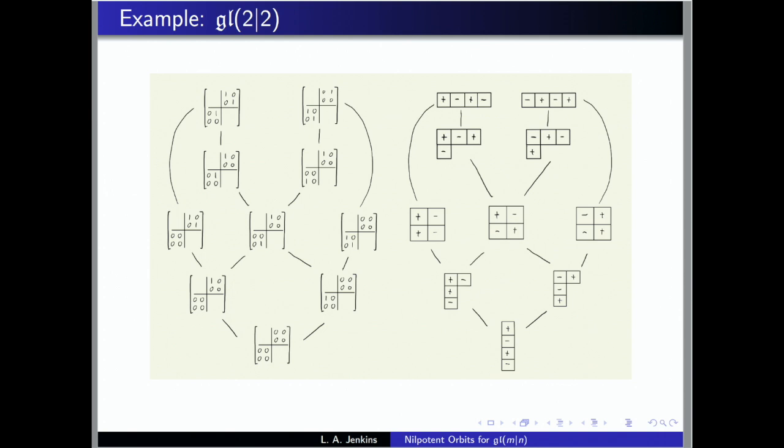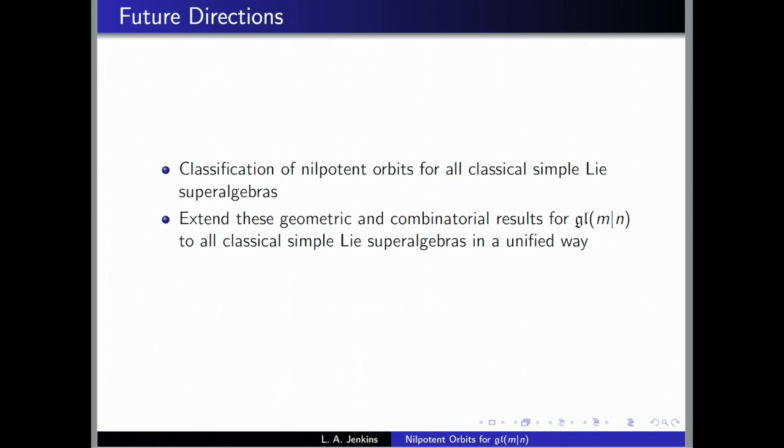To conclude with future directions: everything today was for type A. What about the other types? If you had a classification of nilpotent orbits for those types, that would be very useful, because what let us do everything today was having those explicit representatives to work with for type A. For the other types, we just know there are finitely many orbits but don't have explicit representatives. Having something concrete to work with, and then extending these results from GLMN to all other types in a unified way—rather than piecemeal case by case—would be a nice goal.